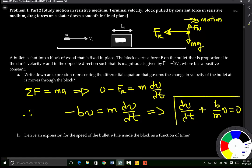You can rewrite this as dV/dt plus B over M times v equal to 0. This is the differential equation required by the problem.